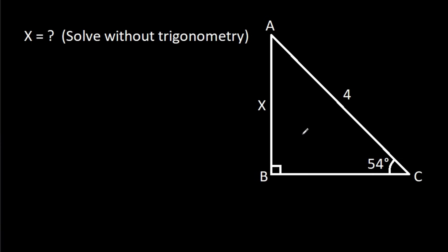In this video, we have been given a right angle triangle ABC in which angle ACB is 54 degrees, AC is 4, AB is X. We have to find X.